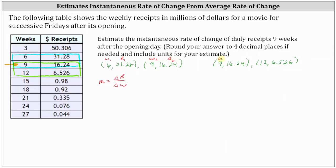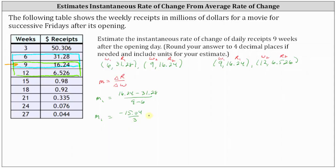Let's determine the average rate of change of daily receipts per week from six weeks to nine weeks — call that M₁. It equals R₂ minus R₁ divided by W₂ minus W₁, or (16.24 − 31.28) divided by (9 − 6). We have M₁ equal to negative 15.04 divided by three, which is approximately negative 5.0133.